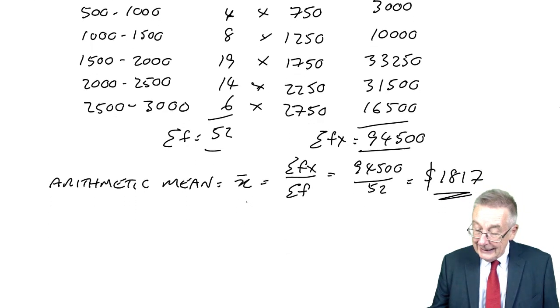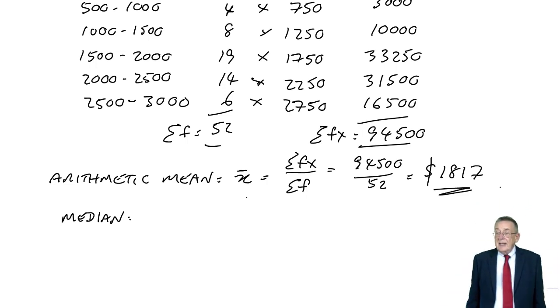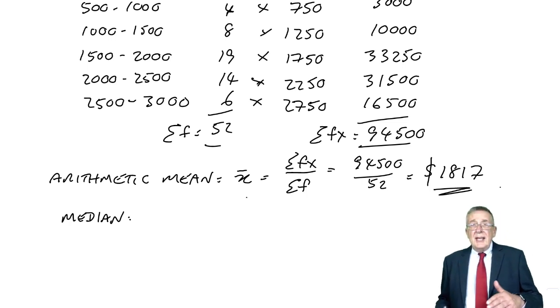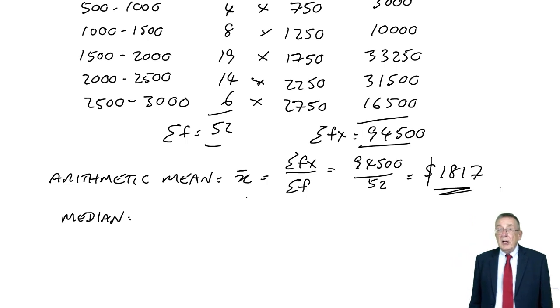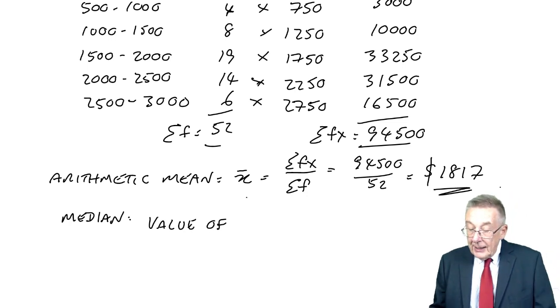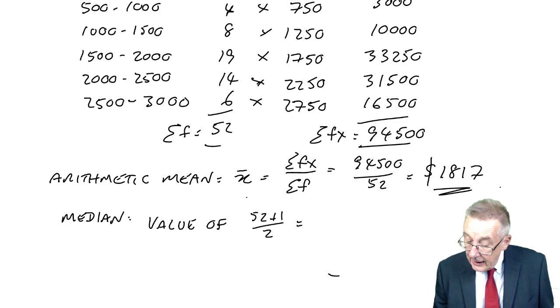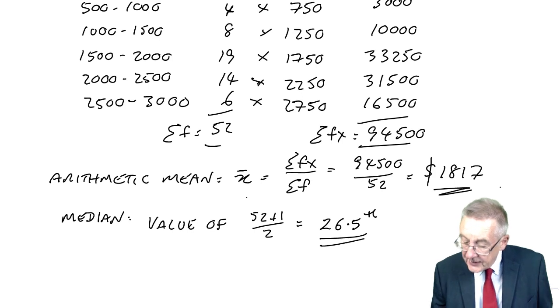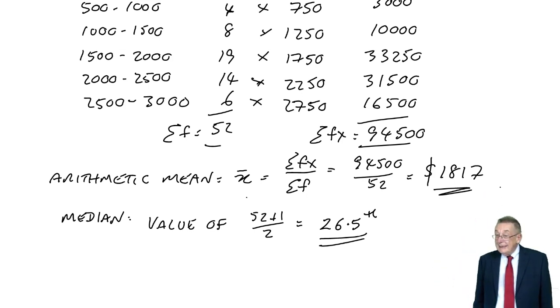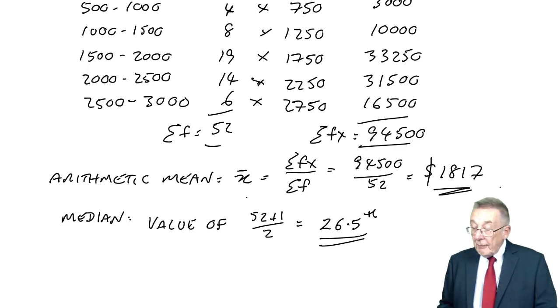And the next one, the median. A little bit different here. We've already discussed what the median is - it's the middle or central observation if they were all arranged in order of magnitude. Well, there are 52, so it's the value of n plus 1 over 2. So 52 plus 1 over 2 is the 26.5th observation.